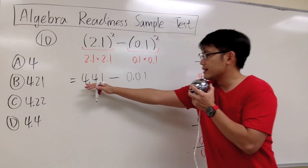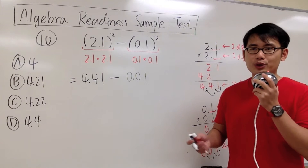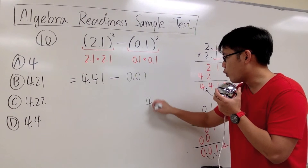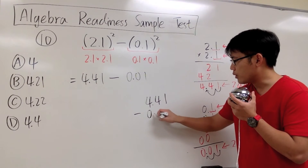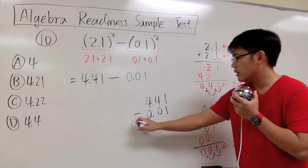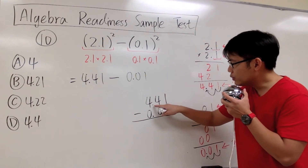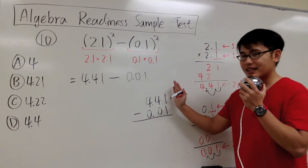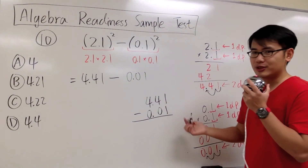At the end, we are going to subtract 4.41 minus 0.01. I want to show you how to set up subtracting decimal numbers — we need to line up with the decimal point. So I'm going to put down 4.41 and then minus 0.01. You see how we line up with the decimal point right here? When we are trying to subtract or add decimal numbers, we need to line up with the decimal point, unlike when we are multiplying. Anyway, this is the setup, and we can go ahead and subtract.